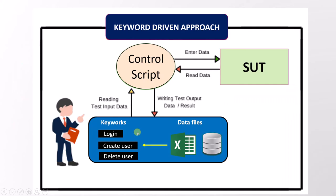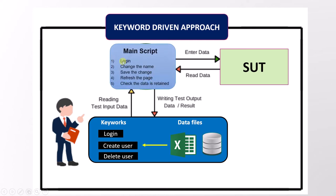Let's understand how the keyword approach applies to the software under test. Like any other approach, here we have one main script, which is referred to as a control script. The main script contains the keywords — for example, 'login' is a keyword. The main script can also access data as input from data files, and not only test cases but sometimes keywords can also get data from the data files.